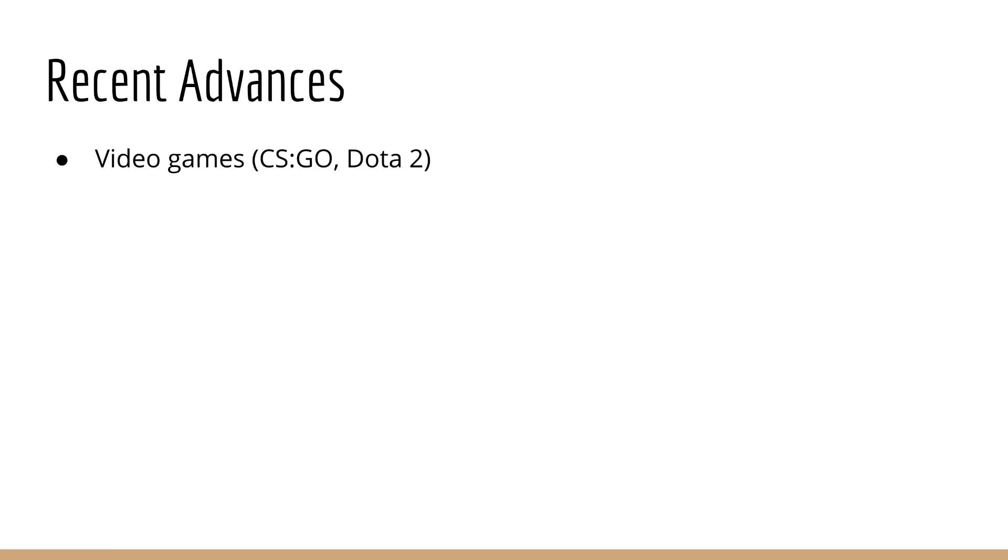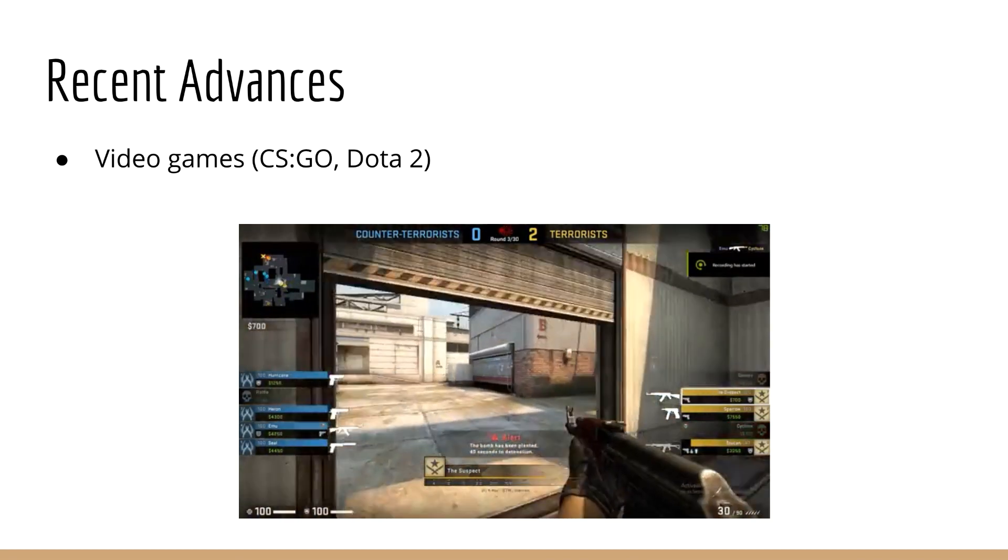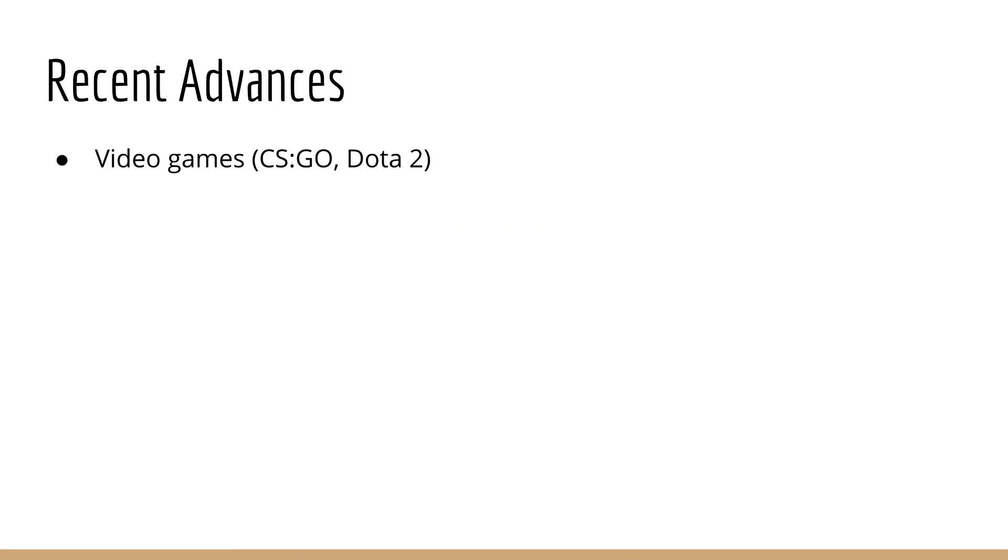Last but not least, video games. Just this past year, we've seen some amazing developments. AIs are now beating professional players in CS:GO and Dota 2.